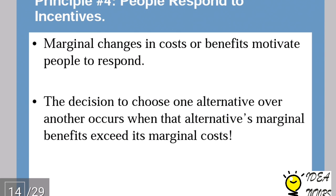The fourth principle is: people respond to incentives. Marginal changes in cost or benefit motivate people to respond. If there is a bit of extra benefit from consuming a good, I will prefer going for that good; if there is a marginal increase in cost, I will try not to go for that good to save that cost. The decision to choose one alternative over another occurs when that alternative's marginal benefit exceeds its marginal cost. If the marginal benefit of producing one more unit of butter exceeds that of one more unit of guns, I will go for production of butter.